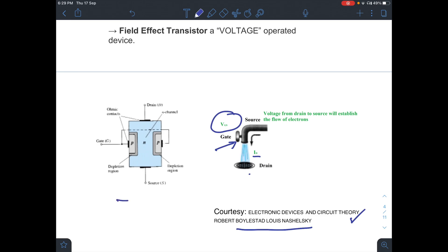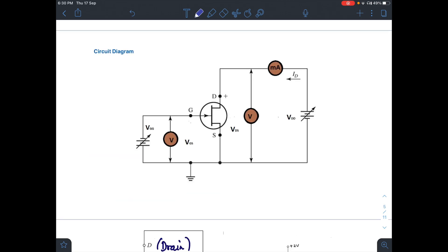This is n-channel FET. This is n-type material through which the electrons will move, and these p-type semiconductors which are connected to each other will be connected to gate. This is the circuit diagram of your experiment in which you can see n-channel FET with voltage sources and two voltmeters to record VGS and VDS.